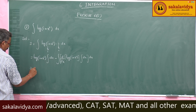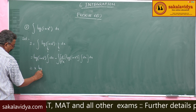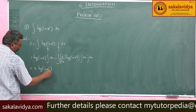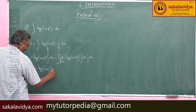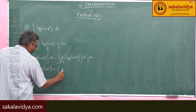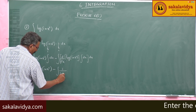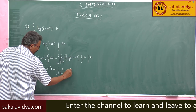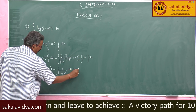The integral of 1 dx is x. So we get x times log(1 + x²), minus the integral of x times the derivative of log(1 + x²), which is 1/(1 + x²) times 2x, then dx.